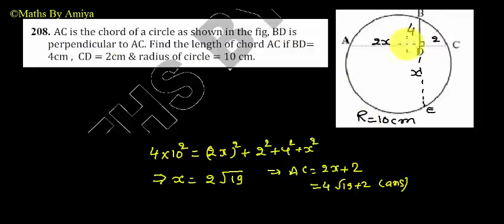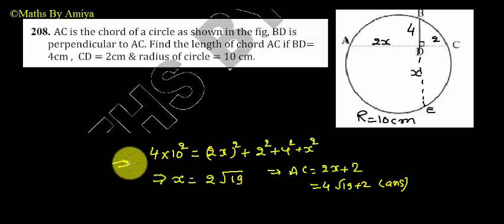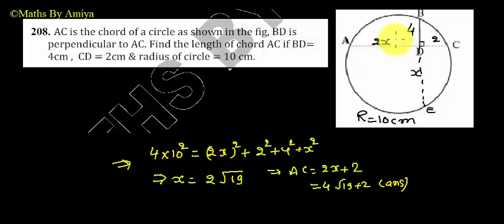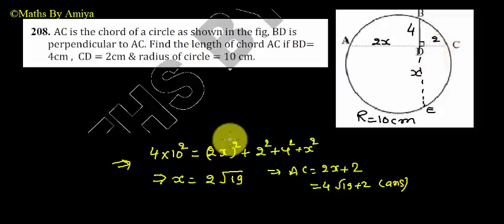Whenever we have two chords perpendicular, there is a 90% chance they will ask a question on this concept, using 4r² = x² + y² + z² + w² along with the chord product formula. I hope it is clear. If you have any doubt, feel free to ping me. Thank you and happy learning.